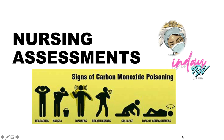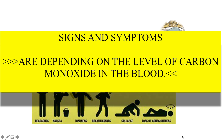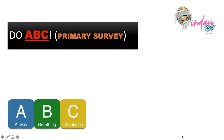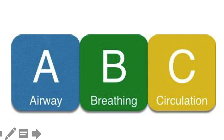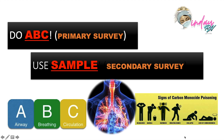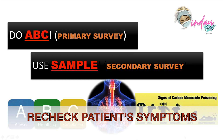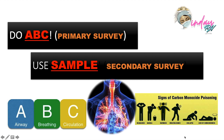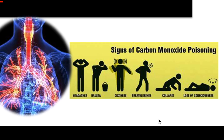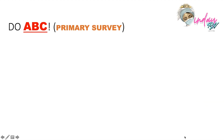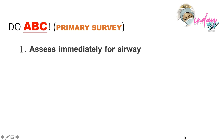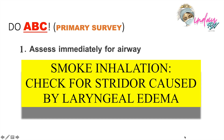Now let's discuss how we assess our patient. First, we need to know the signs and symptoms, which are manifestations depending on the level of carbon monoxide in the blood. We use the ABCs as our primary survey: assessment of airway, breathing, and circulation. Once done with the primary survey, you can use the SAMPLE method. Always note that the system most affected is the respiratory system and oxygenation. In the primary survey, assess immediately for the airway — if due to carbon monoxide smoke inhalation, stridor may be present due to laryngeal edema from thermal injury.